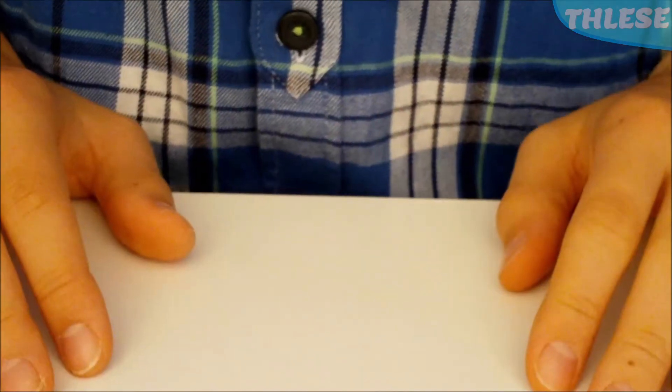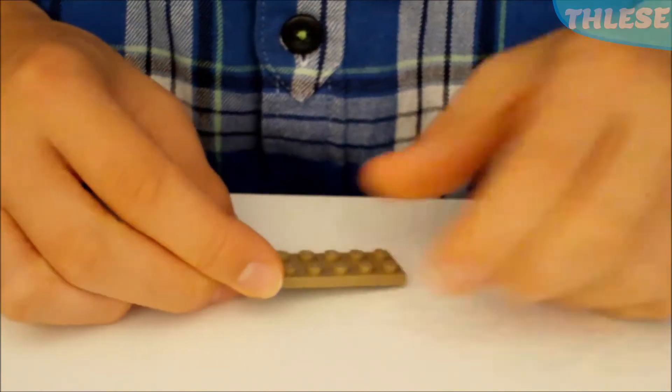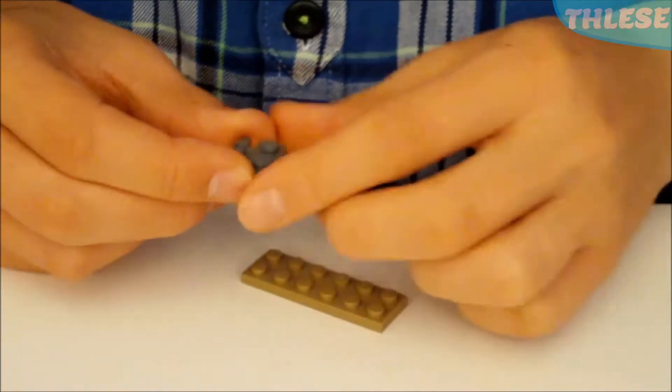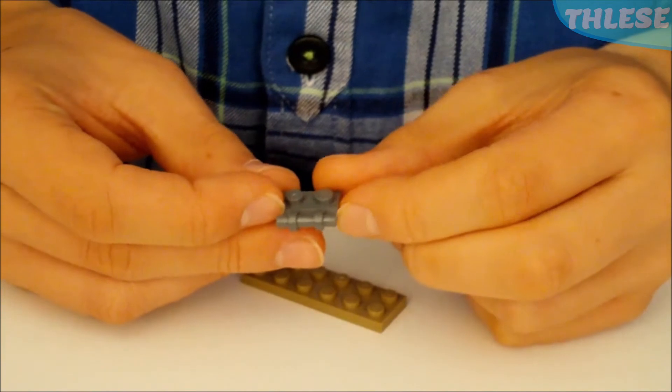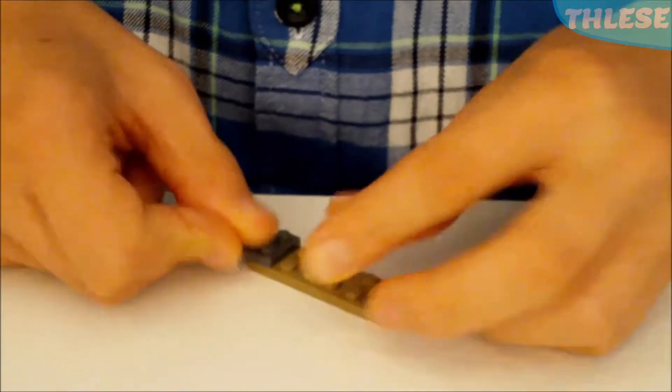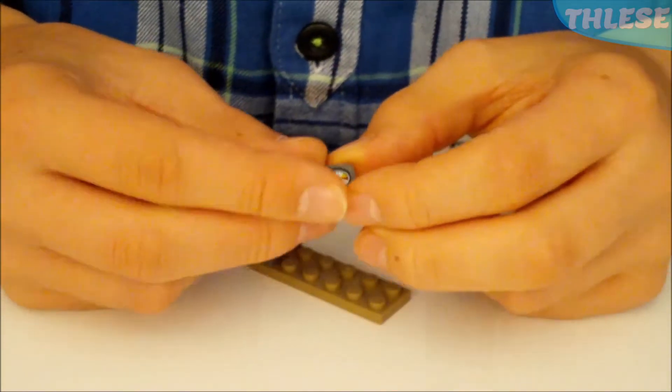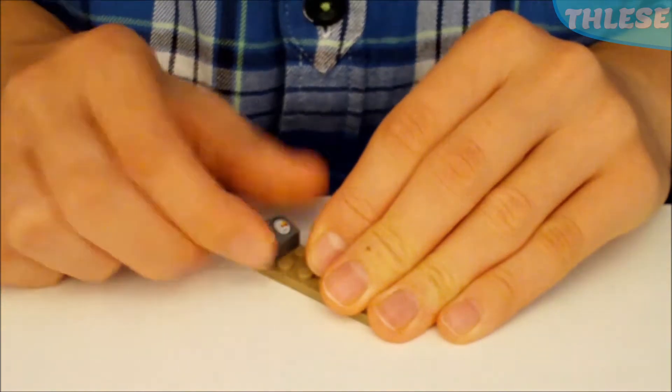So we're going to start off with a 2x6 standard base plate in this tan color. And at the front we are going to attach this 2x1 plate with a handle on it. Now at the front we'll also add a chi slope with a printed console, 2 dials in grey.